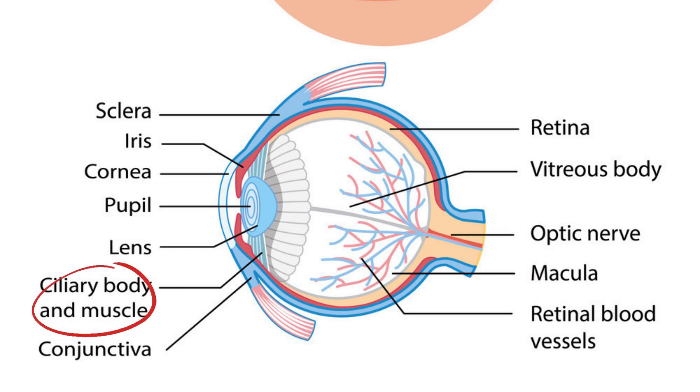The vitreous humor is a clear, gel-like substance that fills the center of the eye, helping to maintain its shape.